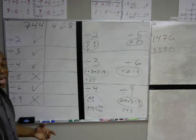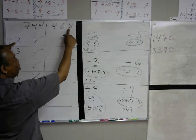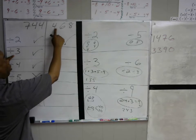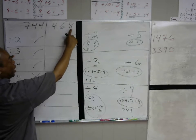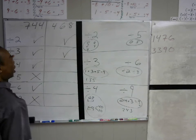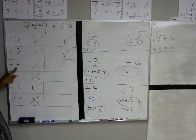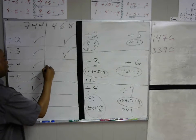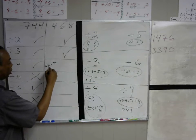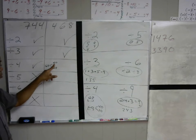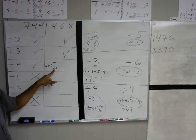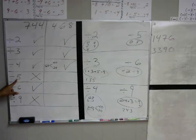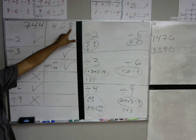Let's look at 468. Can that be divided by 2? The last digit is in the two times tables, so yes, this can be divided by 2. Can it be divided by 3? Let's add the digits: 4 plus 6 is 10, and 10 plus 8 is 18. 18 is in the three times tables, so this can be divided by 3. For 4, are the last two digits in the four times tables? 68 is a bit high, so I'll break it into 40 and 28. 40 is in the four times tables, and 28 is also in the four times tables, so yes, 68 is in the four times tables and 468 is divisible by 4. It has to end in a zero or a five to be divisible by 5 — it doesn't, so that's no.